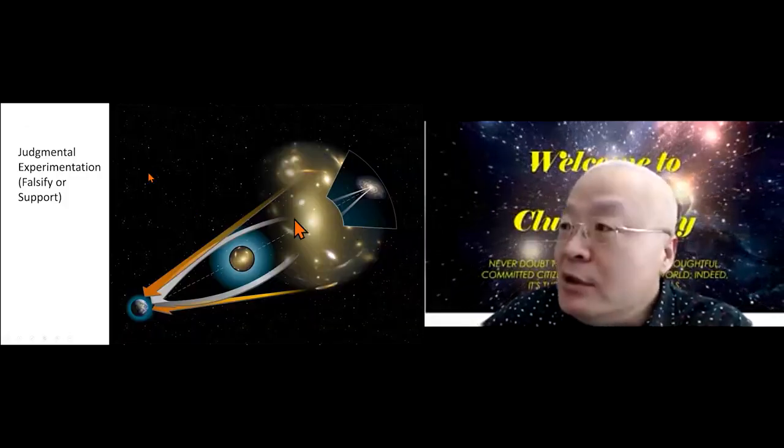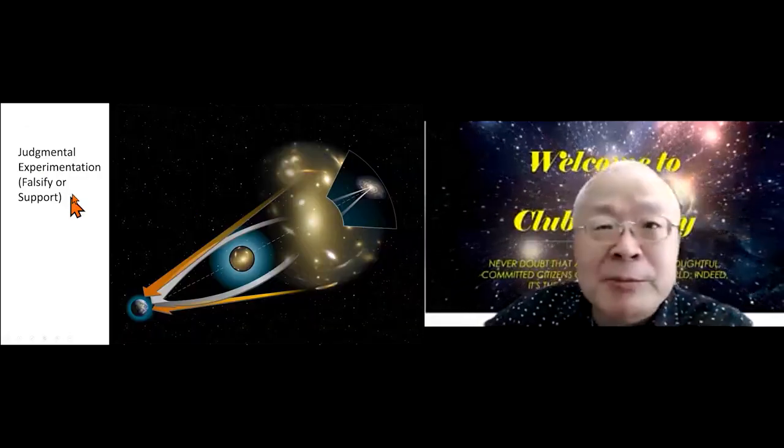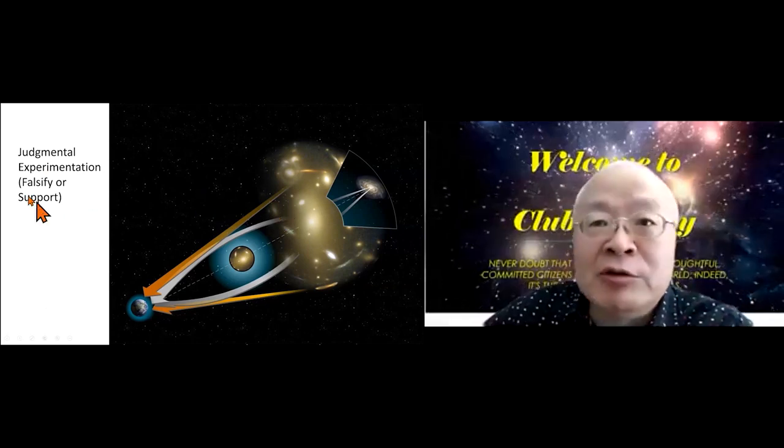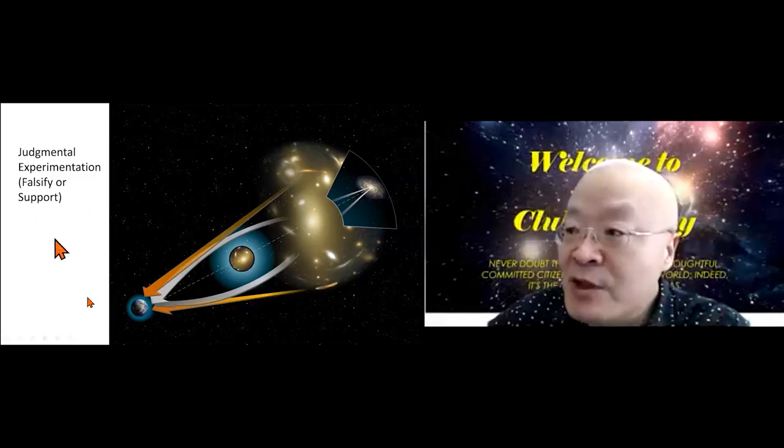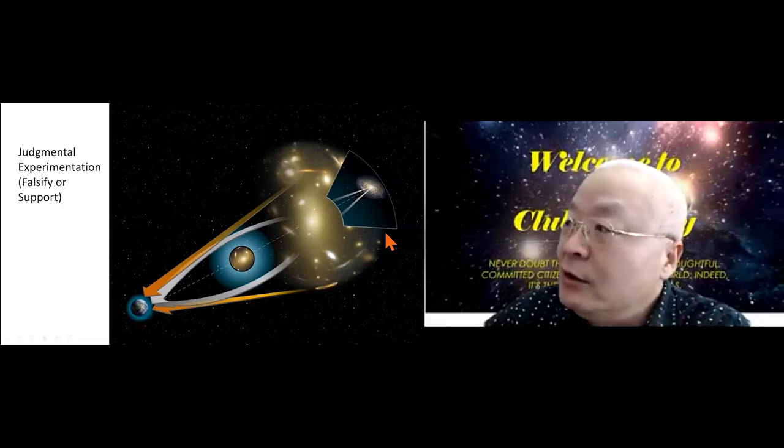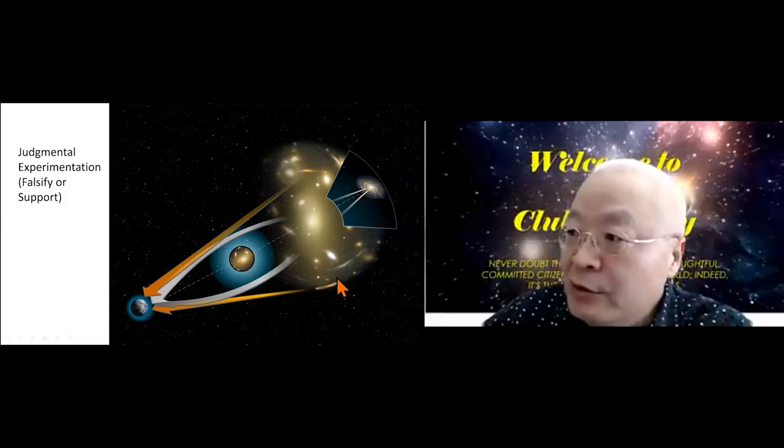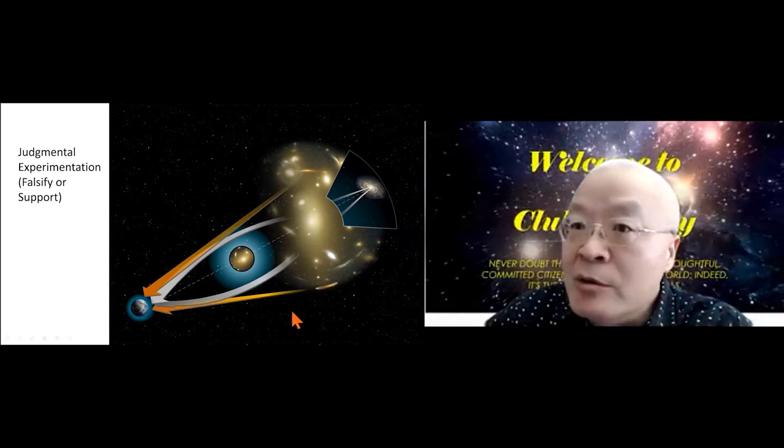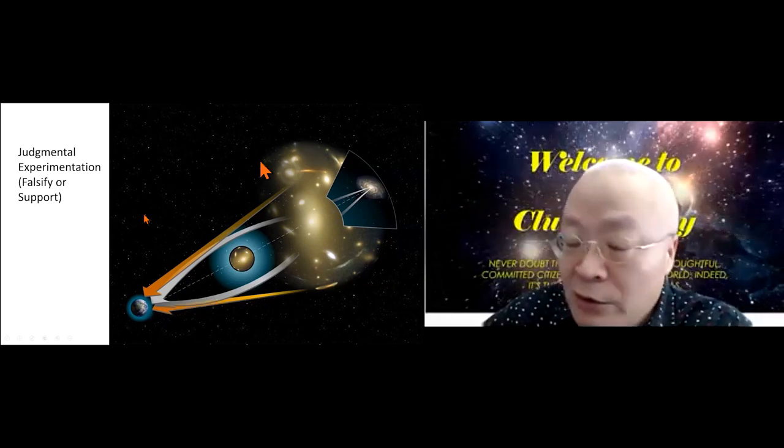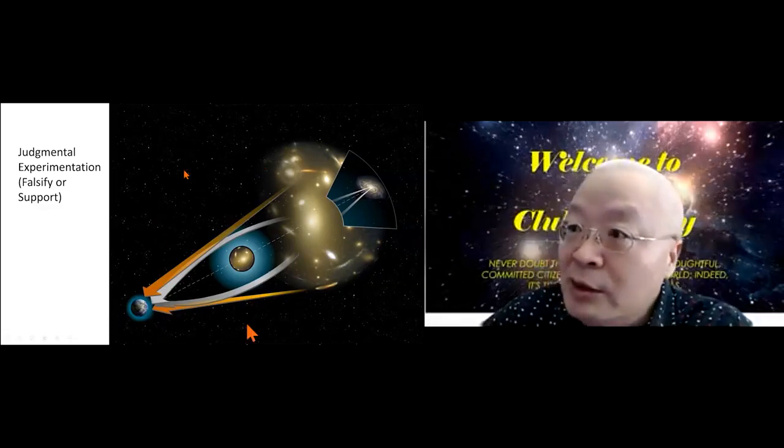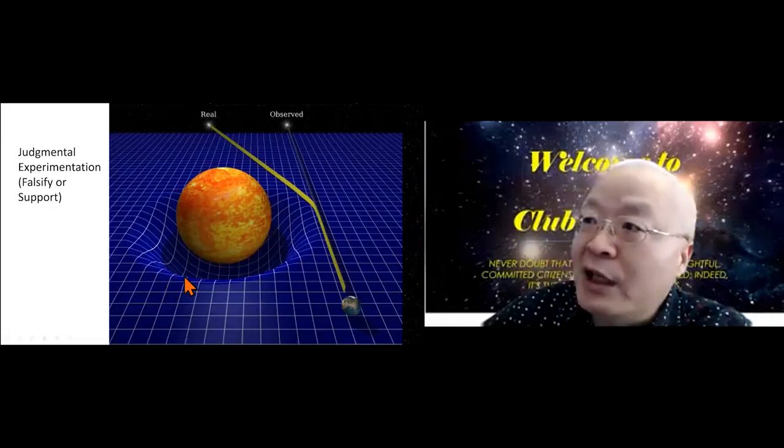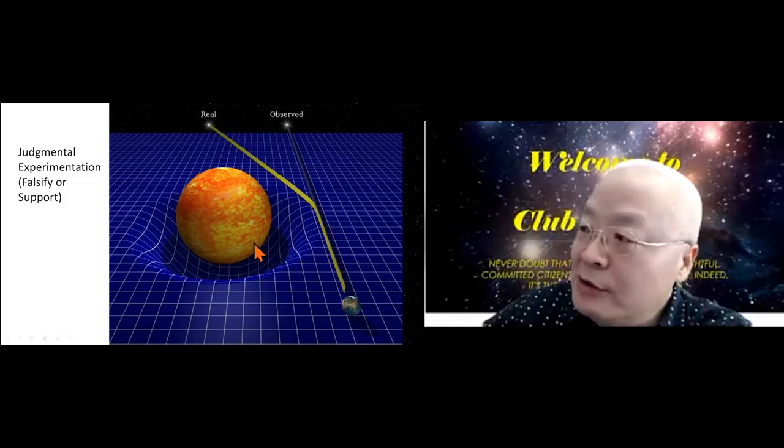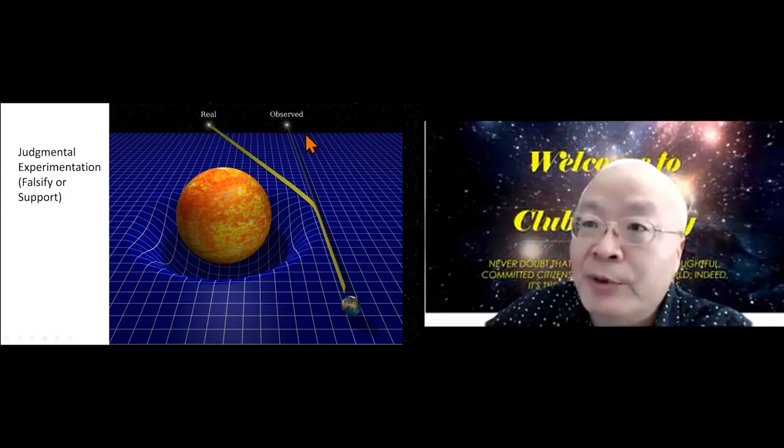This is what I call an image of a judgmental experimentation. You do your observation either to falsify or support your hypothesis. This is Einstein's idea about the curving light because the curving space. Based on this experiment or observation, he built up our understanding about the space in this kind of image, the curving light.